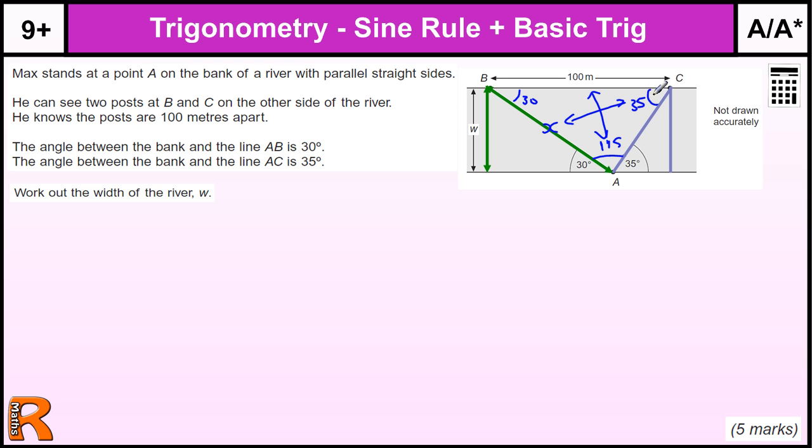Okay, so if I call this one A, the one I'm trying to use, and little a, and then this one B and little b. We're trying to find the side, so I'm going to use the version of the formula where the side is on the top.